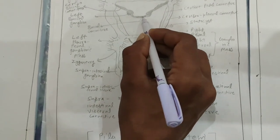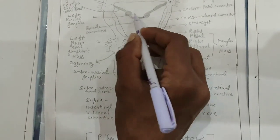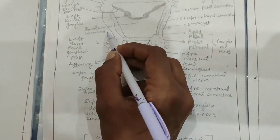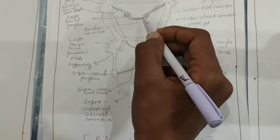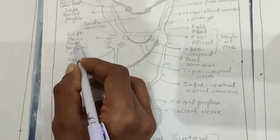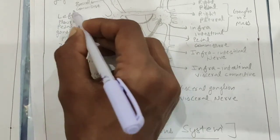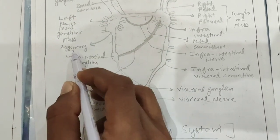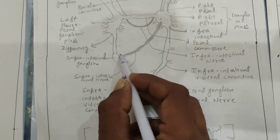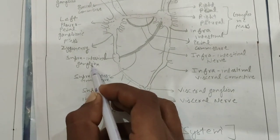The two buccal ganglia are the same type, so they are attached by buccal commissures. On the left-hand side, two ganglia are present — pleural ganglion and pedal ganglion — collectively known as a ganglionic mass. Below the left pedal ganglion, another ganglion is present, known as the supraintestinal ganglion.